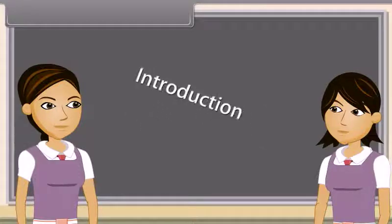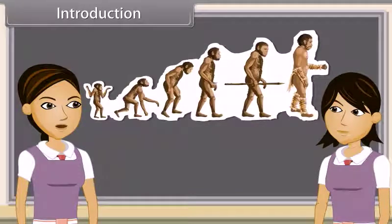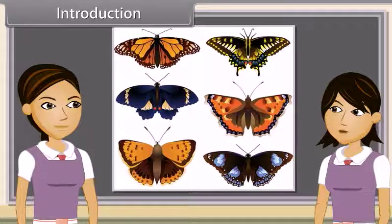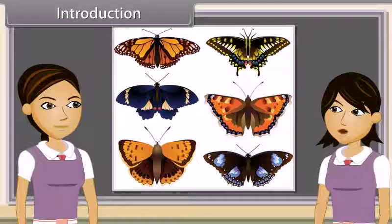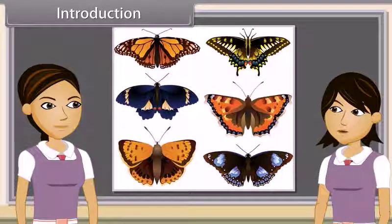Introduction: Evolution is any change across successive generations in the heritable characteristics of biological populations. Variations are the structural, functional, or behavioral changes from the normal characters developed in living organisms.